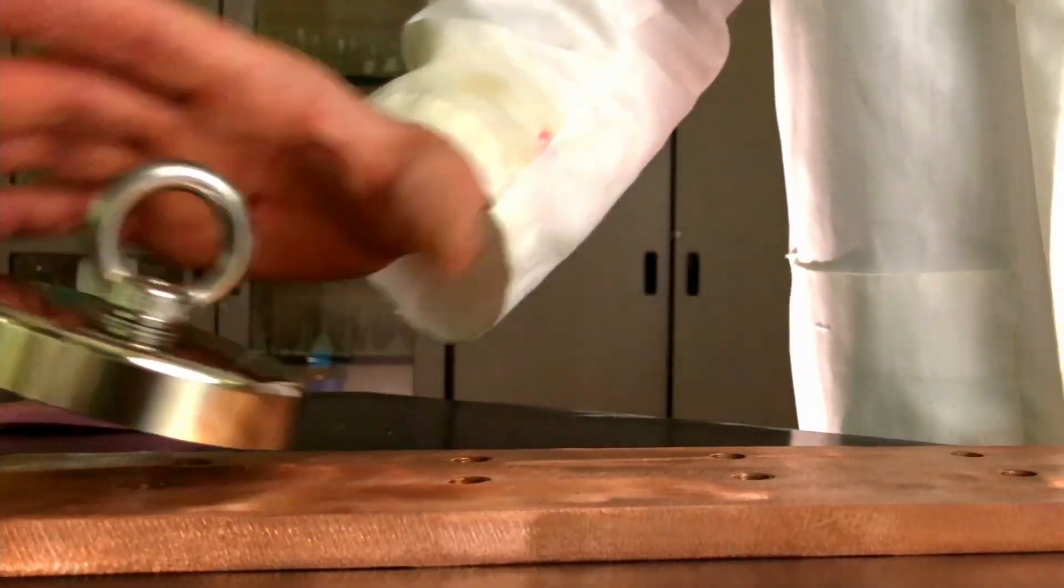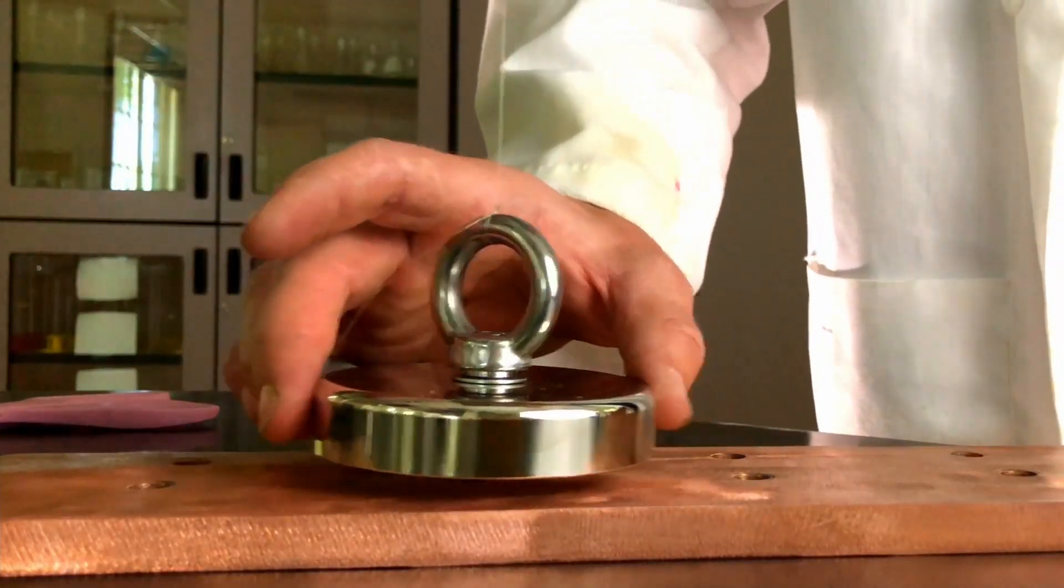Then if we shift the copper plate so that it's in line with the magnet as it swings, watch how the deceleration changes. Where did that momentum of the huge magnet swinging go?